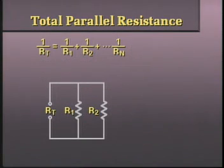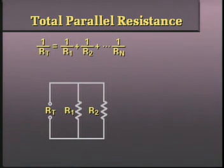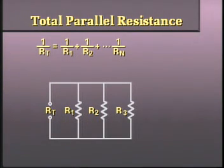The formula for total parallel resistance is therefore based on the conductance concept, and is written as: the reciprocal of the total resistance equals the reciprocal of the first resistance plus the reciprocal of the second resistance plus the reciprocal of each of the parallel resistors.